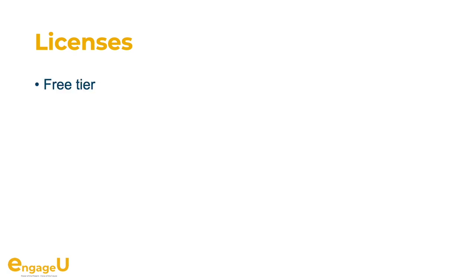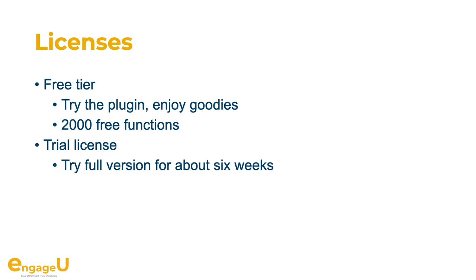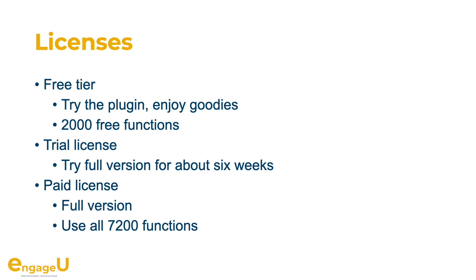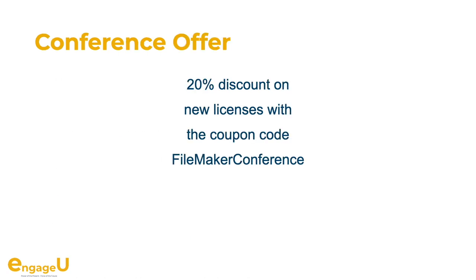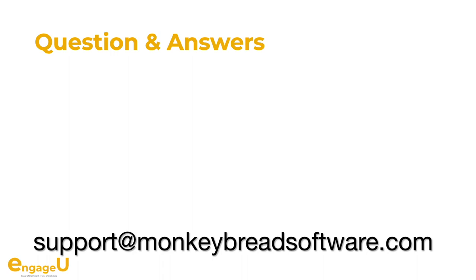If you need a license, we have a free tier — you can try the plugin and enjoy about 2000 free functions which don't need a paid license. You can also apply for a trial license to try the full version for a few weeks. Then we have paid licenses which give you the full version with all 7000 functions. If you need a license now, we have a conference offer for 20% off using the coupon code FileMaker Conference. Please email us if you have questions at support@monkeybread software.com. Thank you.